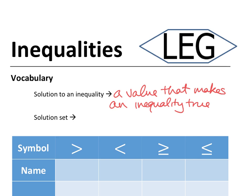There's not going to be just one solution to any particular inequality. We're going to have what's called a solution set. A solution set for an inequality is all of the values — all of these solutions. There will be more than one answer, and when we put them all together, we create our solution set.